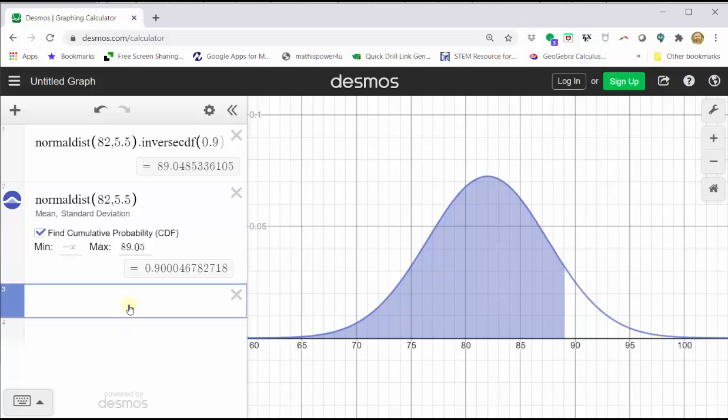If we went down to cell three and typed in x equals 89.05, we can see the actual test score on the graph of the distribution. So this does verify the test score is the 90th percentile.